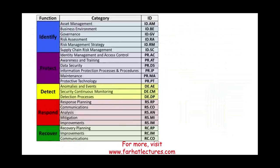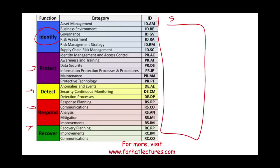Now, here's the big picture. The first function is identify. Under identify, we have categories, and under each category we have subcategories and references. For the identify function, we have six categories: asset management (one), business environment (two), governance (three), risk assessment (four), risk management strategy (five), and supply chain risk management (six).